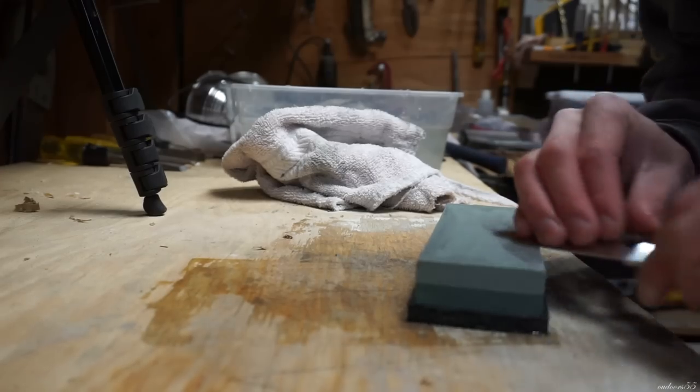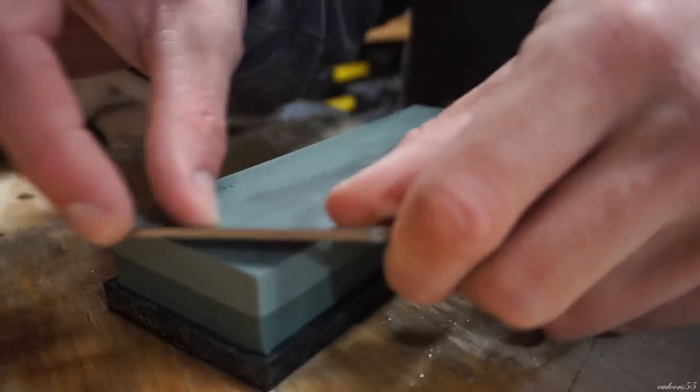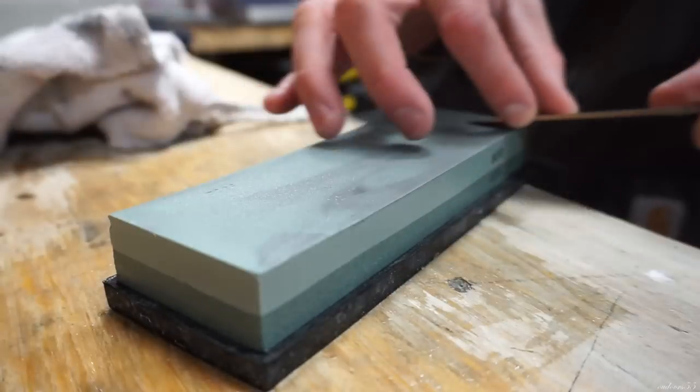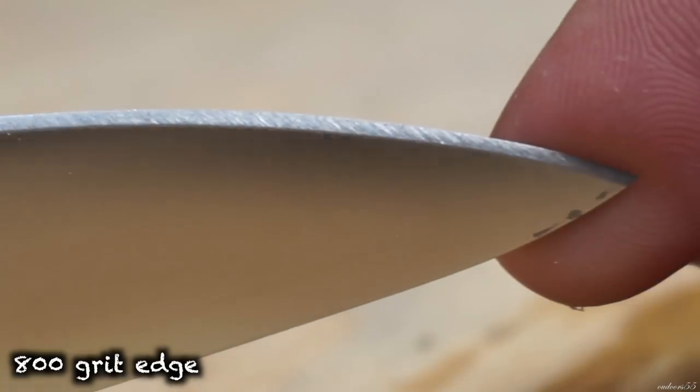So next I move to the 800 grit side of my combination stone and work the knife on the stone till all the scratches from the previous stone were removed, at least to the naked eye. And this is what the edge looks like after an 800 grit stone.